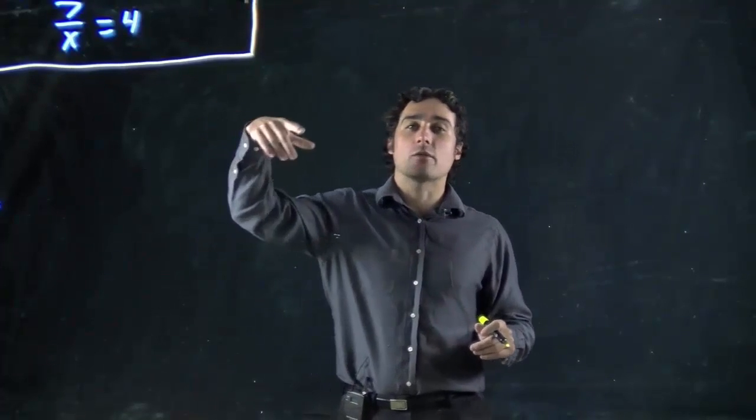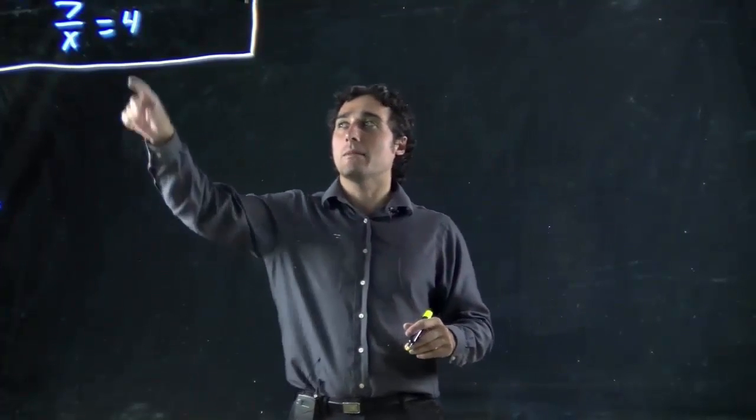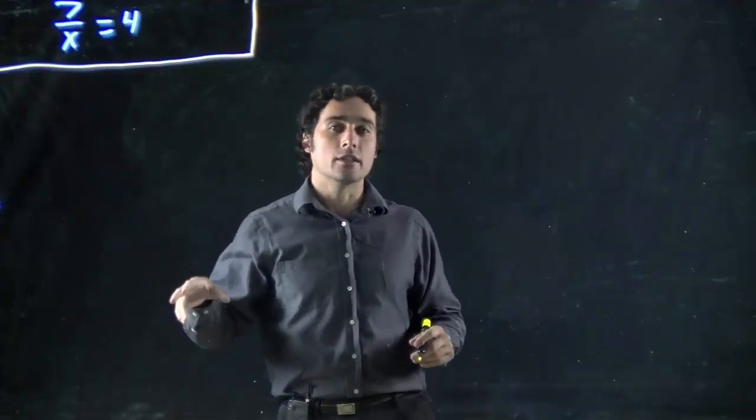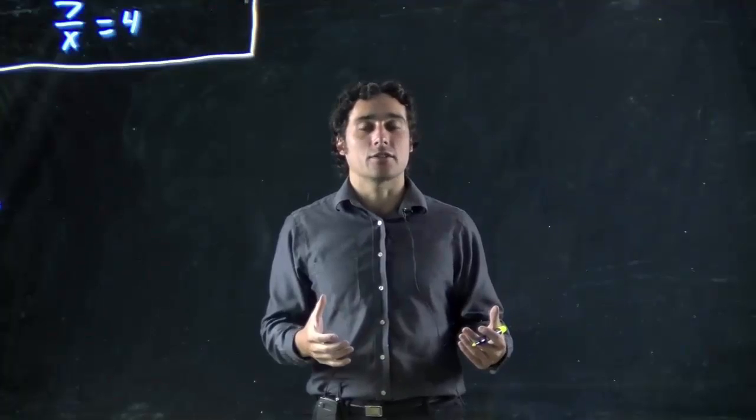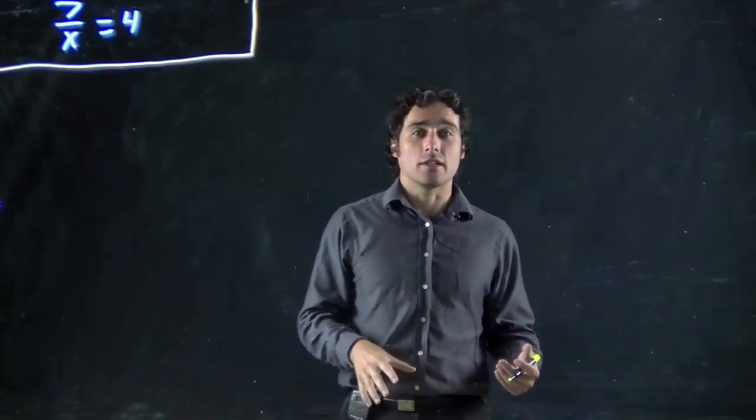Hi. This time we're going to be looking at an equation with a variable on the bottom, namely 7 over x equals 4. When the variable is on the bottom, this tends to be the most intimidating question for students, and I'm going to show you two different ways of approaching it.